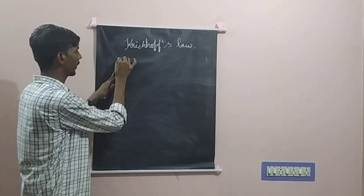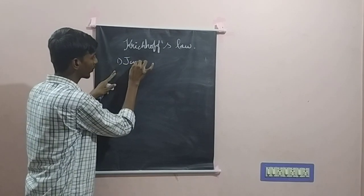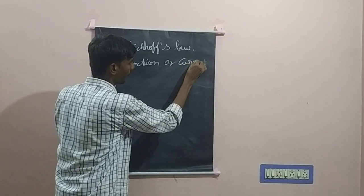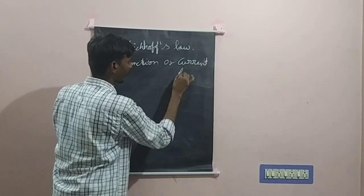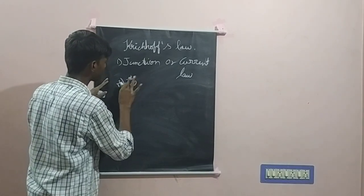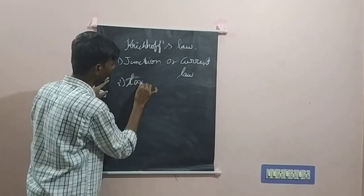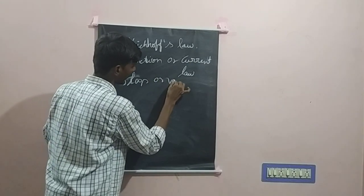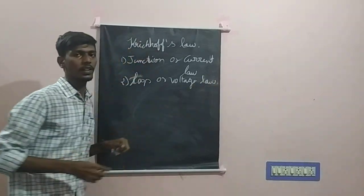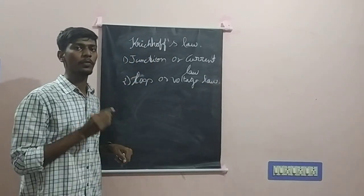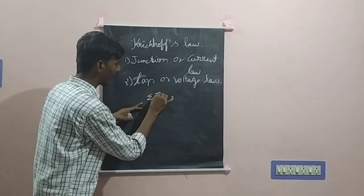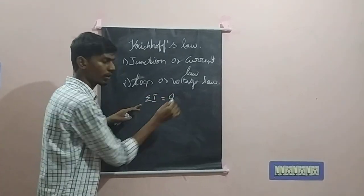There are two laws in Kirchhoff's laws. The first is the junction or current law. The second law is the loop or voltage law. The first law states that the algebraic sum of current meeting at a junction will be equal to 0. That is, summation of i at a junction will be equal to 0.